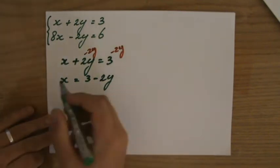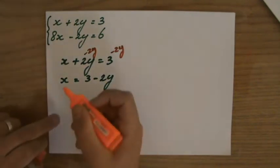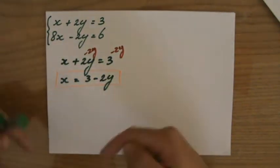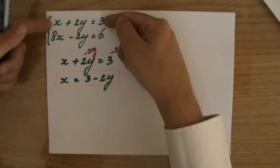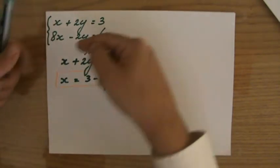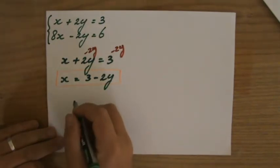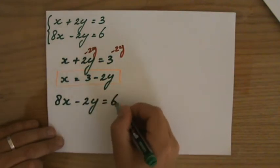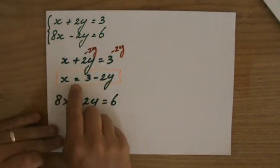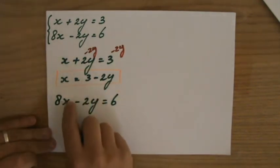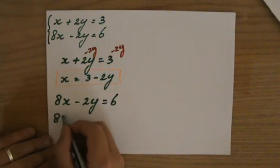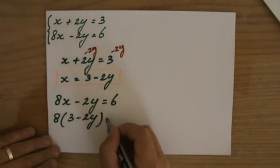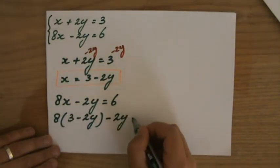Okay. Now I've found that. Let me put a little box around that. I have to now substitute this information in the other equation. So I've picked the first equation, now I'm going to substitute this into the second equation. Let me write down the second equation: 8x minus 2y equals 6. And now I say that x is the same as 3 minus 2y. I'm going to substitute that.